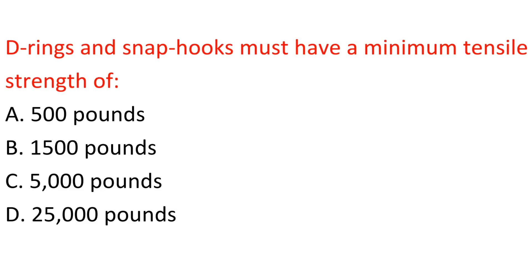Question: D-rings and snap hooks must have a minimum tensile strength of: A. 500 pounds. B. 1,500 pounds. C. 5,000 pounds. D. 25,000 pounds. Answer: C. 5,000 pounds.